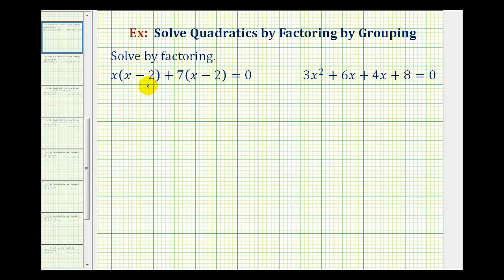Looking at our first example, half of the work has already been done for us. Notice that these two products contain a common factor of x minus 2. So in this case, we're going to factor out the common binomial factor of x minus 2 from these two products.